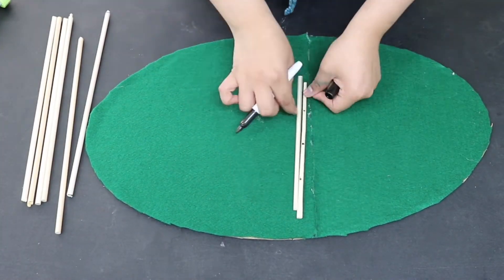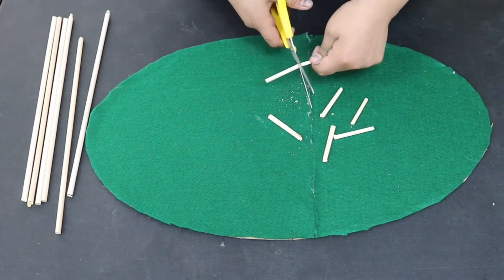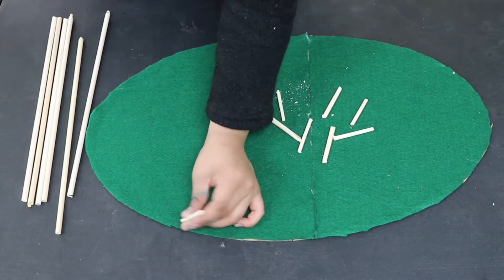For this next part, I'll be using chopsticks, wooden dowels, and popsicle sticks to create a border so that the ball doesn't bounce out.